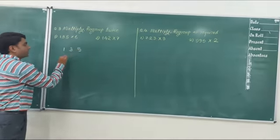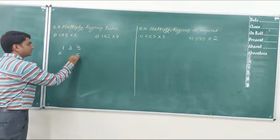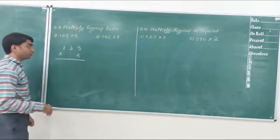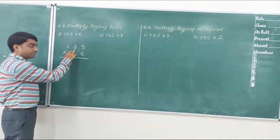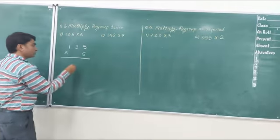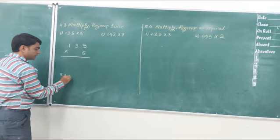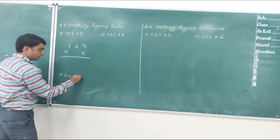135 multiplied by 6. So here, as we know that we should start multiplying each digit separately from the right side. Let's multiply 5 by 6. 5 multiplied by 6, 6 fives is 30.